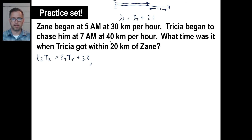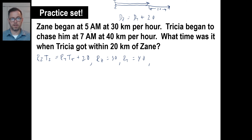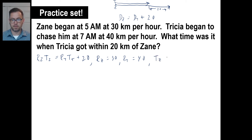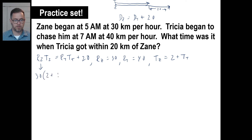Zane's rate is 30 kilometers per hour and Tricia's rate is 40 kilometers per hour. We don't know how long they went, but Zane started at 5 a.m. and Tricia started at 7 a.m., so the time of Zane is two more than the time of Tricia — T sub Z equals T sub T plus 2. Substituting: 30 times (2 plus T sub T) equals 40 times T sub T plus 20.